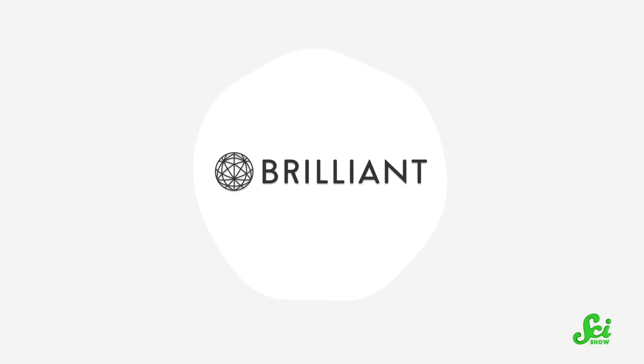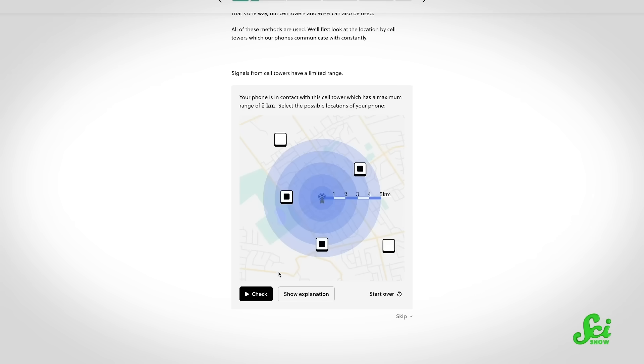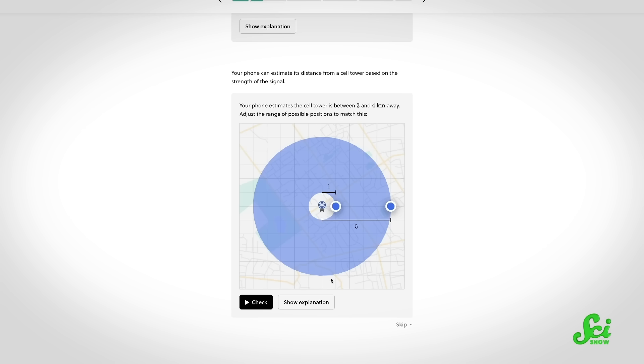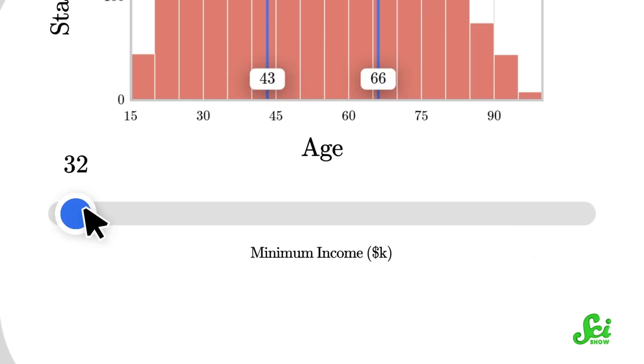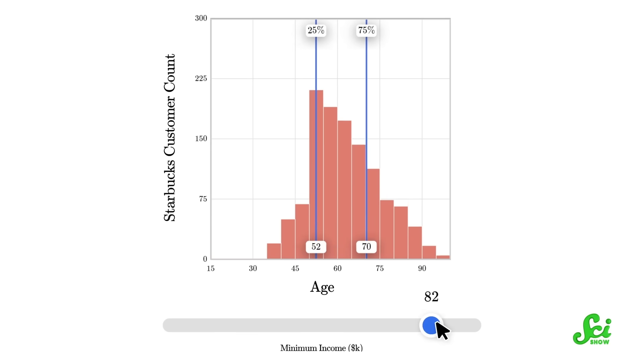Brilliant is an online learning platform with interactive lessons in science, computer science, and math, and they are the sponsor for this video. Their course on how technology works teaches you all about computers, from hardware that needs to keep cool to their red-hot algorithms. And Brilliant courses, much like computers, take some great minds to engineer.